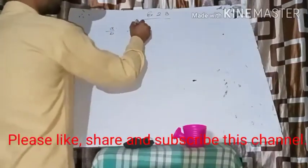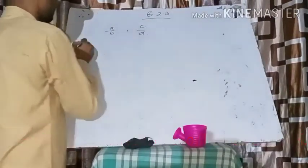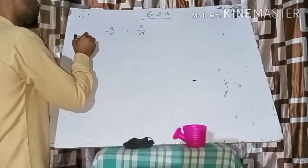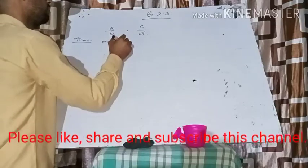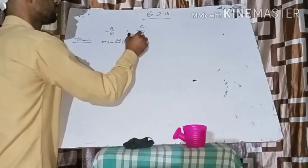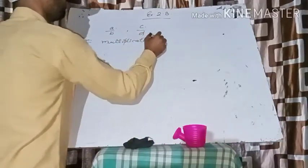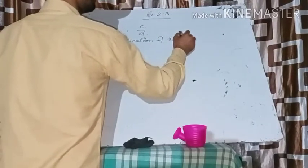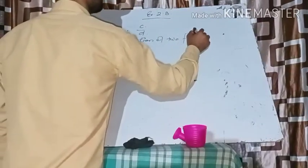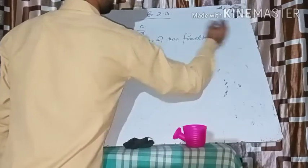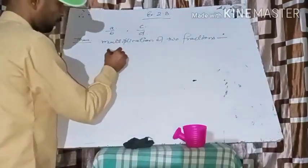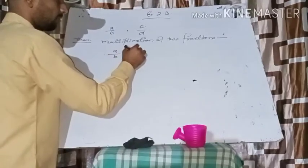Then multiplication of two fractions is: a upon b multiply c upon d.